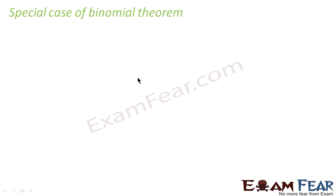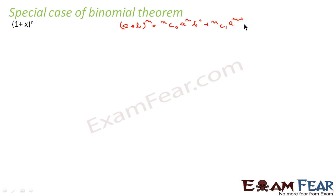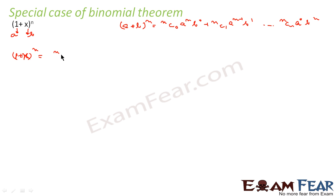We have one more special case in binomial theorem, and that is (1 + x) to the power n. In (a + b)^n = nc0·a^n·b^0 + nc1·a^(n-1)·b^1 + ... + ncn·a^0·b^n, here a is replaced by 1 and b is replaced by x. So nc0 · 1^n = nc0, and nc0 is also equal to 1.